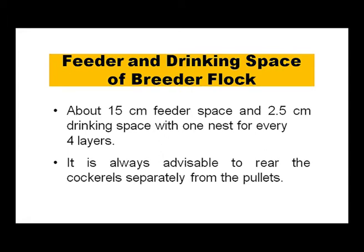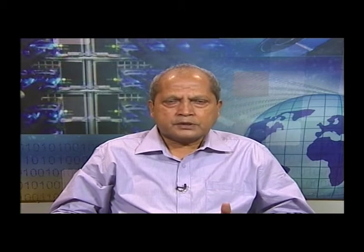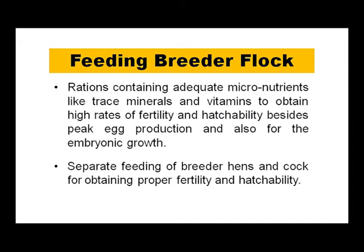For a breeder flock, about 15 cm feeder space and 2.5 cm drinking space are required, with one nest for every four layers. It is advisable to rear cockerels separately from pullets. Feeding the breeder flock follows the same requirements as commercial layer farming, but considering fertility and hatchability, the developing embryo is entirely dependent on the contents and structure of the egg, so nutrition in the feed must be carefully managed.